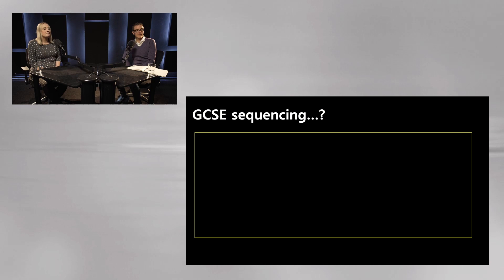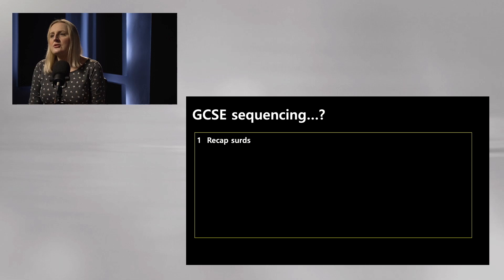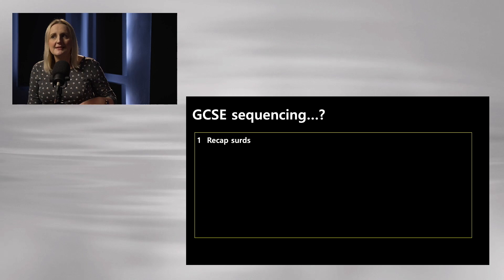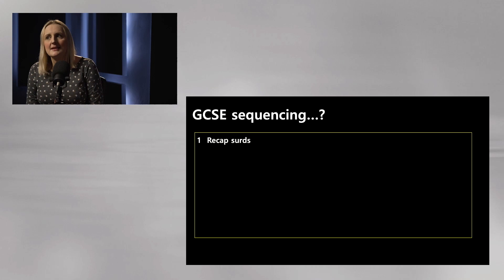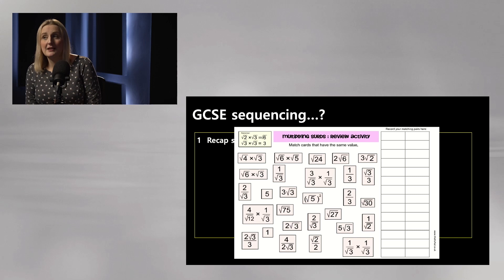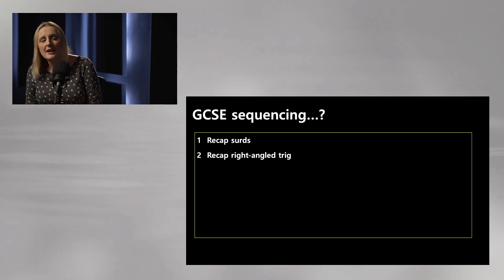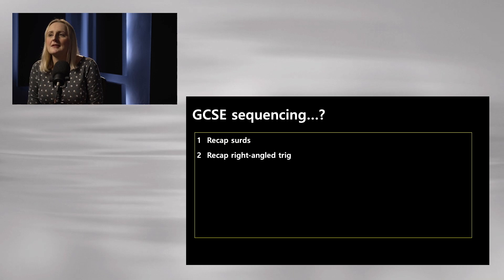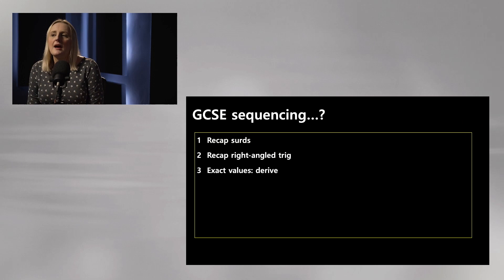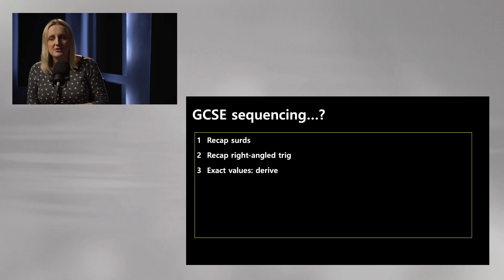At GCSE, the question is how you sequence it. You might start with a recap of surds before the trig unit — that might need a lesson or two. When I gave my class a surds task they were useless at it even though we'd taught surds fairly recently, so they're not ready for exact trig values. Then recapping right-angle trig — I have that down for one lesson, but it might take longer. We maybe spend a lesson making sure they're secure on that before moving to exact trig values.